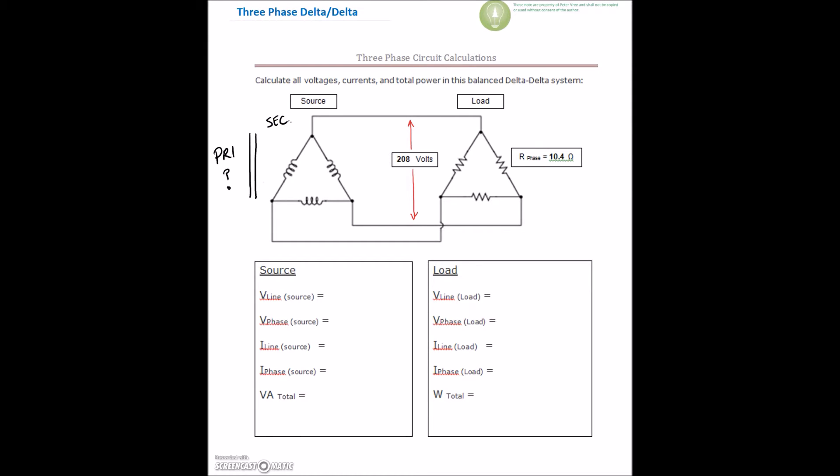And we can see here with the values that are given that the voltage right here is 208 volts. So I have a delta secondary feeding a delta resistive load. They're balanced in that each of these guys is 10.4 ohms.